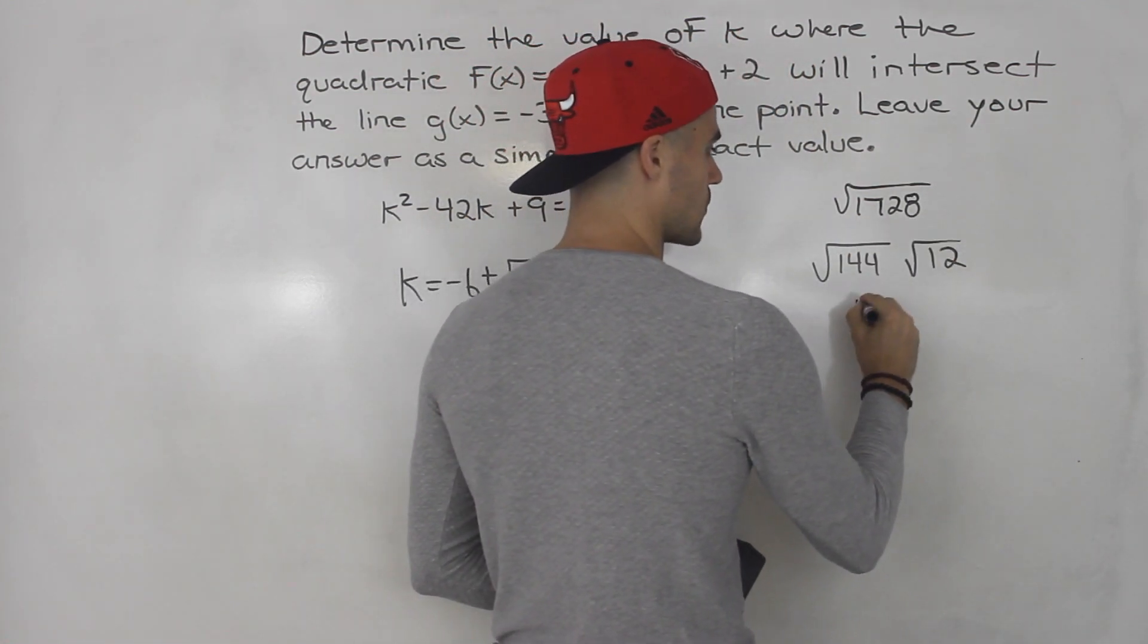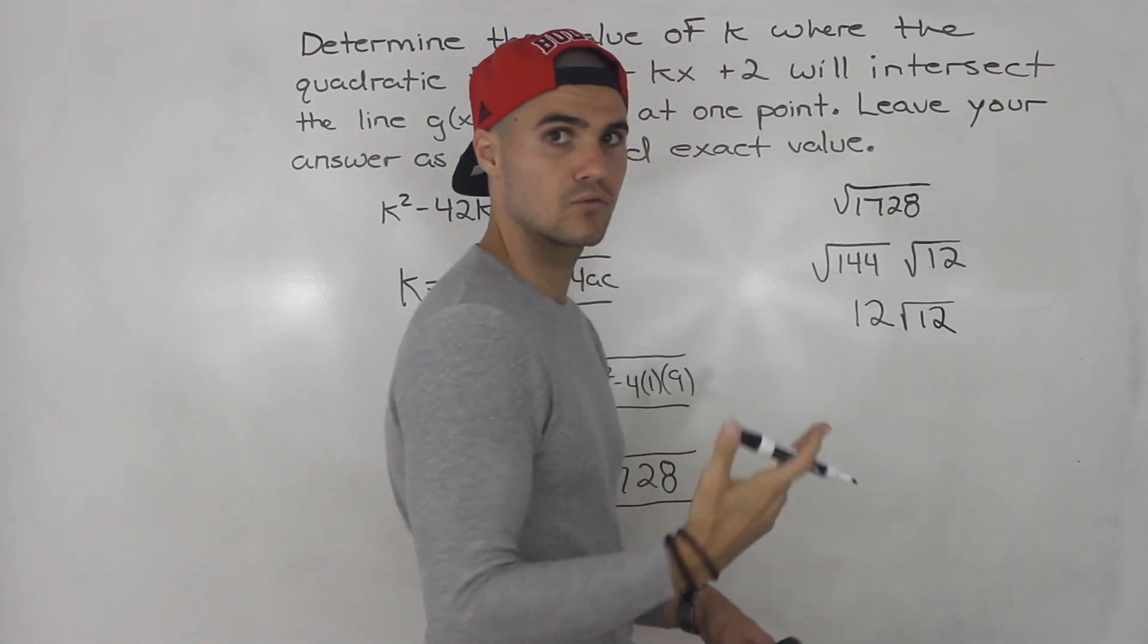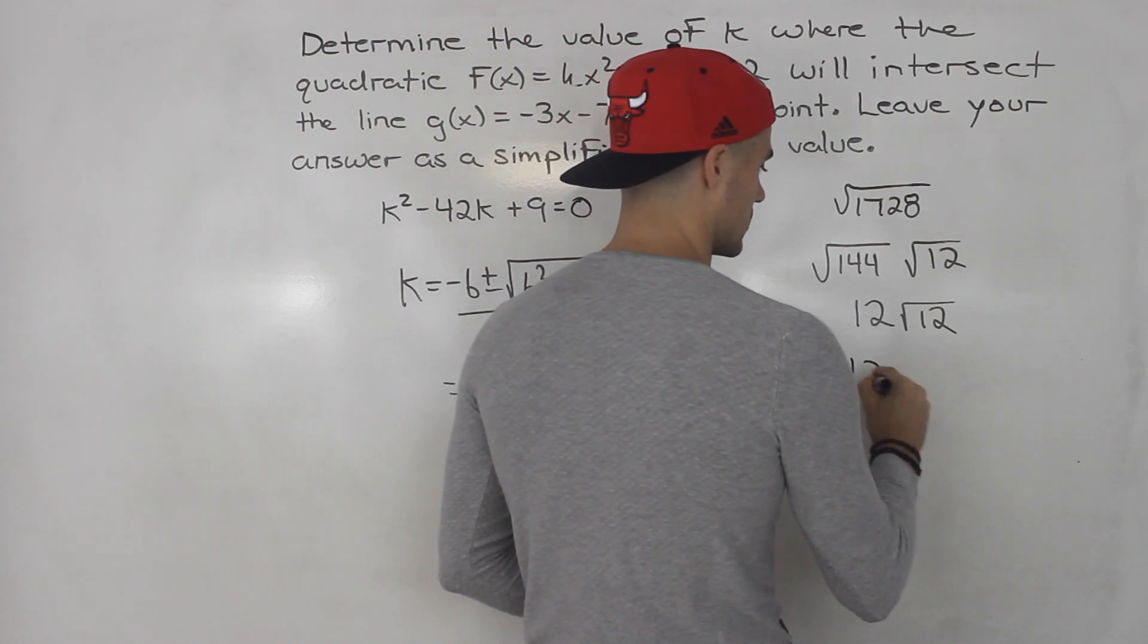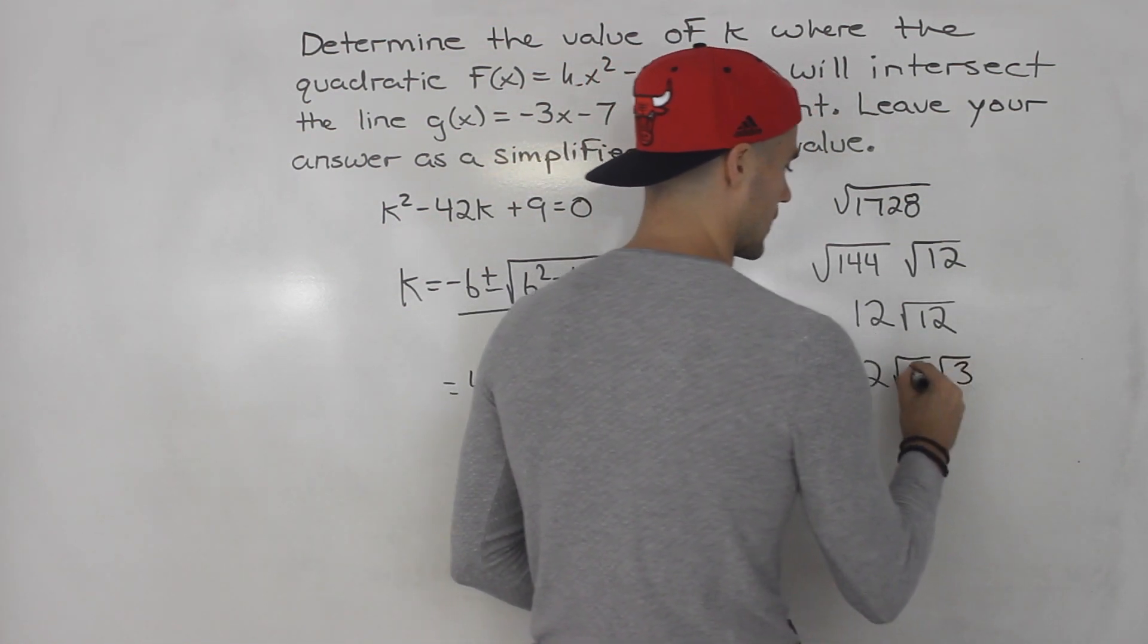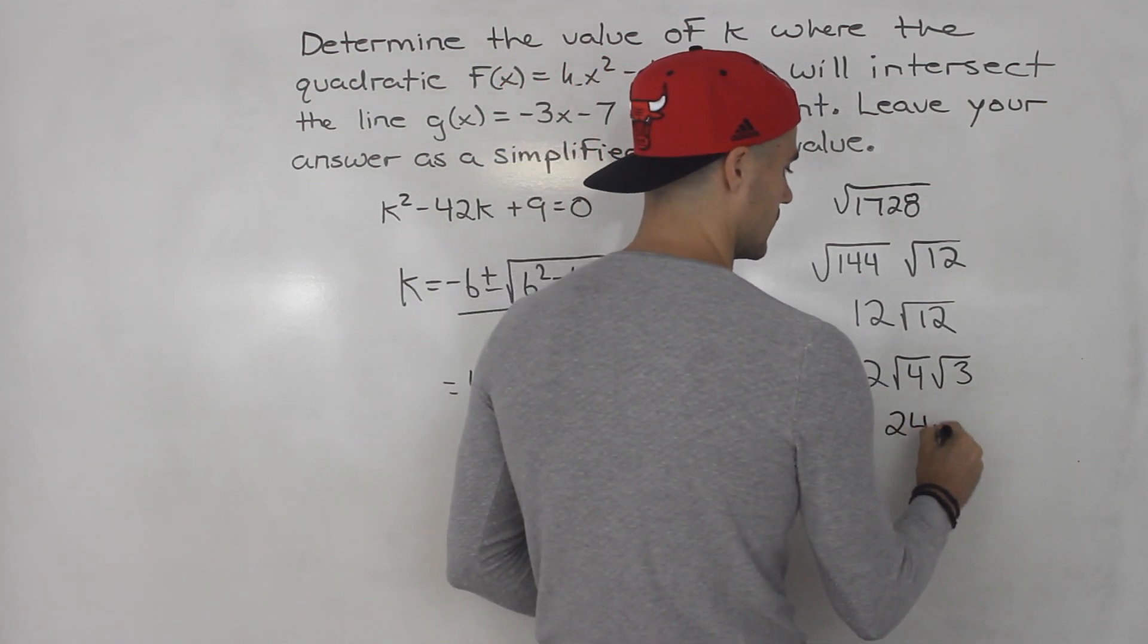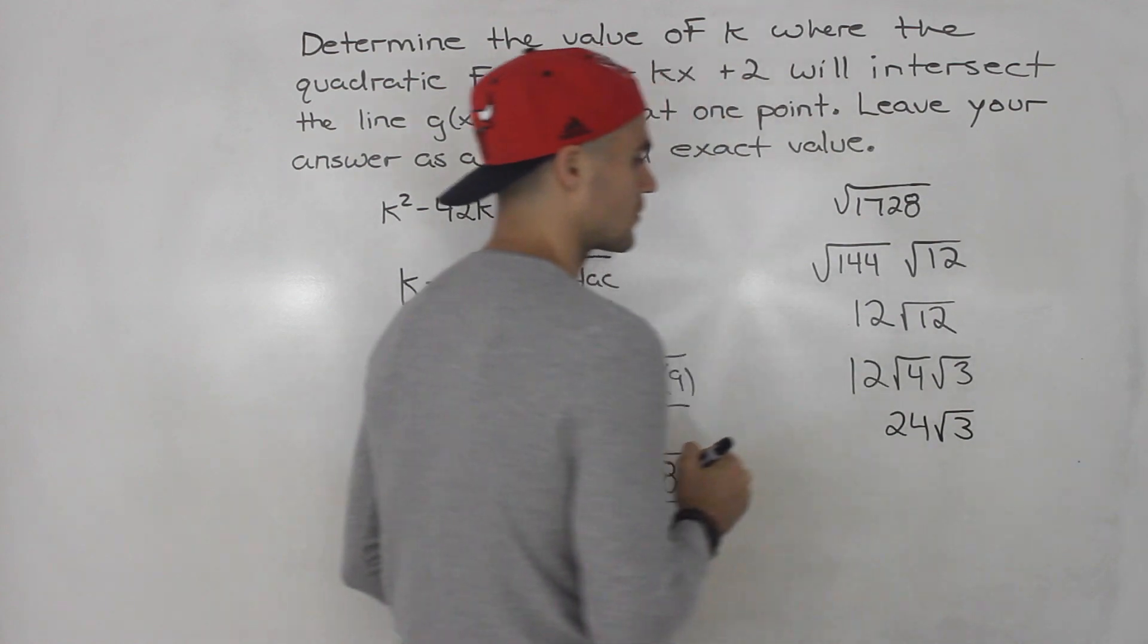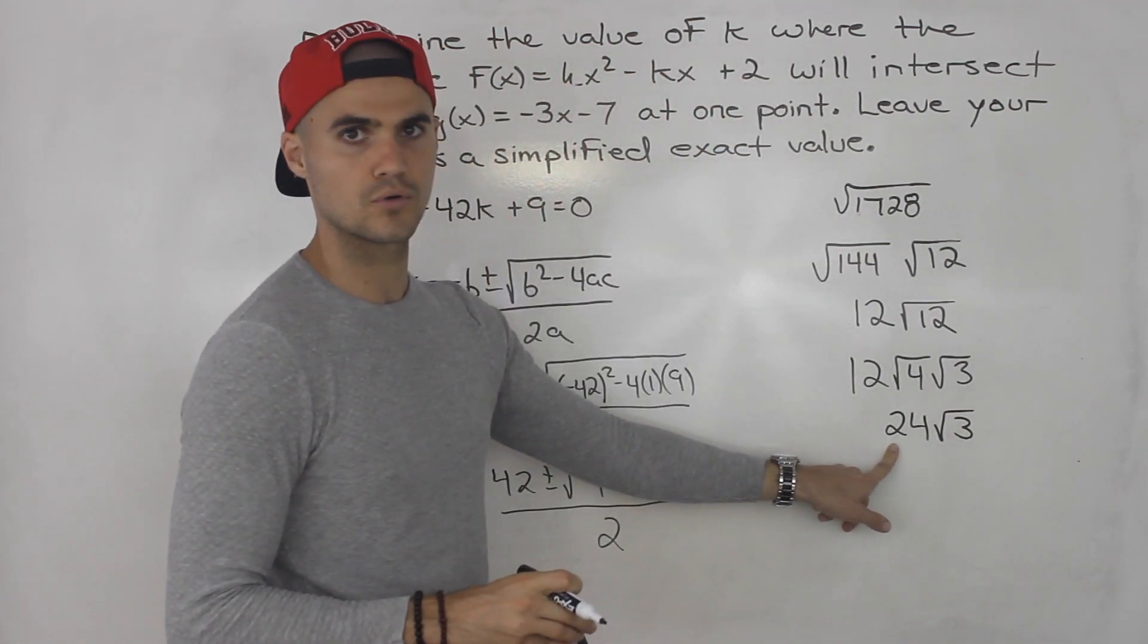Root 144 is 12. Then we'll have root 12 here. And then notice that root 12, we could simplify further as well. So root 12, we can split up into root 4 times root 3. And root 4 is 2. 2 times 12 is 24. So this is 24 root 3.